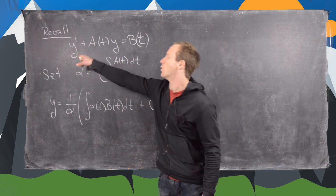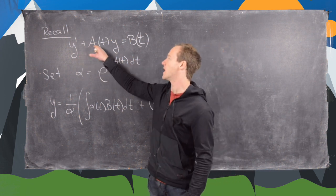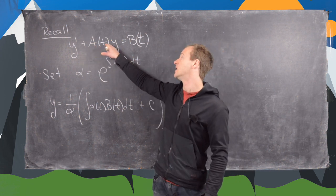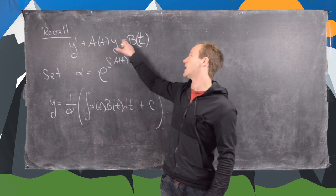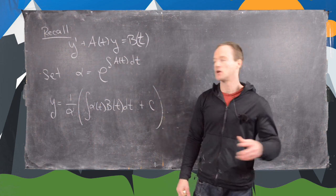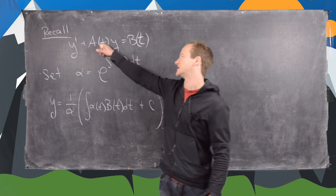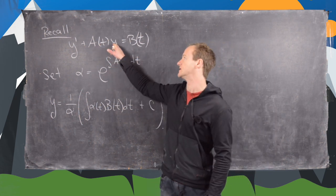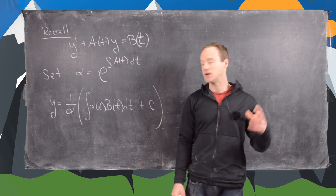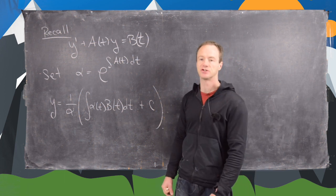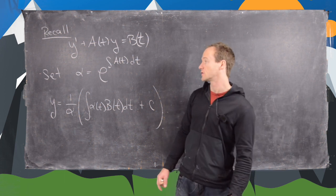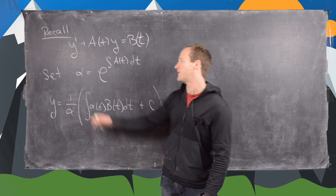So here we have y prime plus a function a of t times y equals a function b of t, and these are all scalars. This is a scalar function, this is a scalar function, this is a scalar function — so this is a single differential equation.